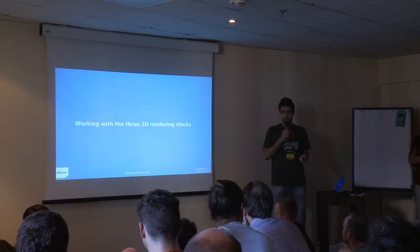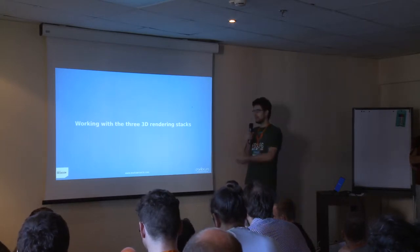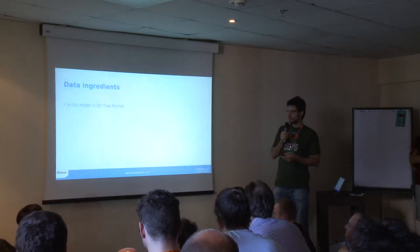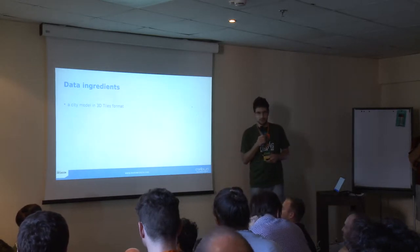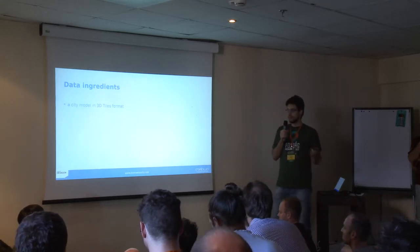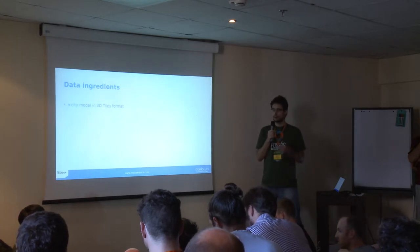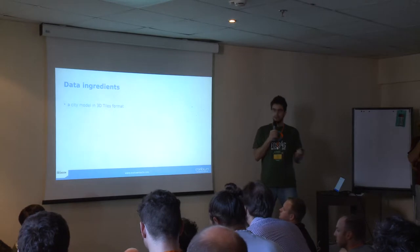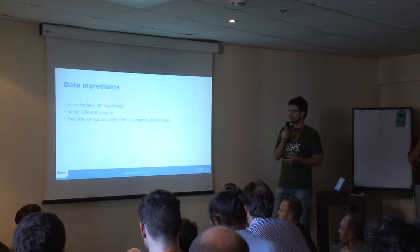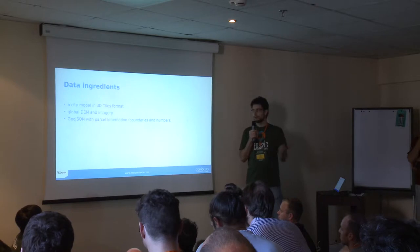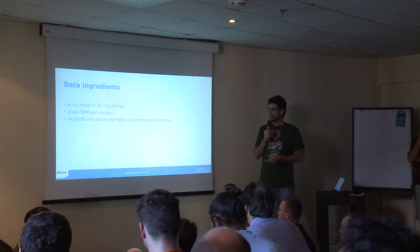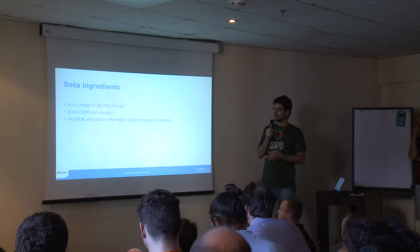How do we configure or make this example work in those stacks? Let's start with data ingredients. We have a city model in 3D tiles format, because all three stacks — Cesium natively, VTS Geospatial converting 3D tiles to its own format, and iTowns claiming 3D tiles support — can use it. We'll also need a global DEM and imagery, and we'll download the GeoJSON with parcel information from a Czech survey bureau.